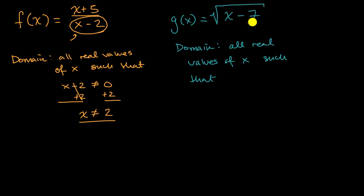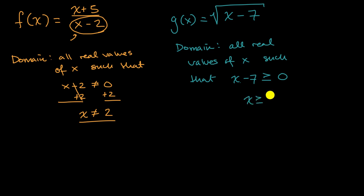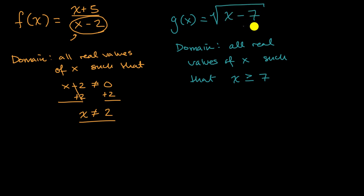So x minus seven — whatever we have under the radical — needs to be greater than or equal to zero. Such that x minus seven is greater than or equal to zero. If we add seven to both sides, that means x needs to be greater than or equal to seven. So the domain is all real values of x such that x is greater than or equal to seven.